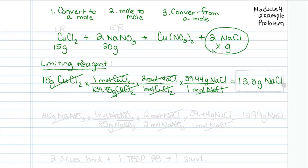So that means if all of my 15 grams of copper chloride reacted, I would get 13.3 grams of sodium chloride. Okay.